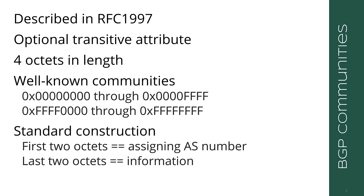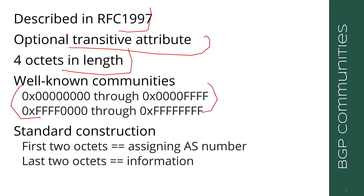Standard communities are described in RFC 1997 — quite an old RFC. These are an optional transitive attribute, which means each BGP speaker does not need to process them, but every BGP speaker needs to pass them along to other BGP speakers when sending an update or route. Each community is four octets in length. There are well-known communities and ephemeral or not-well-known communities. The standard construction of a community is that the first two octets are the AS number of the assigning AS, and the last two octets are the actual information contained in the community.